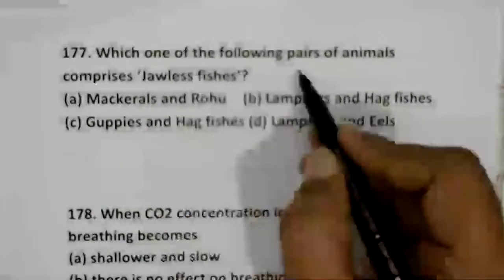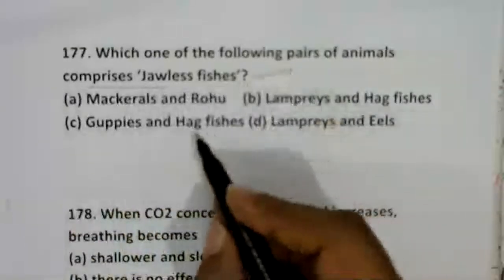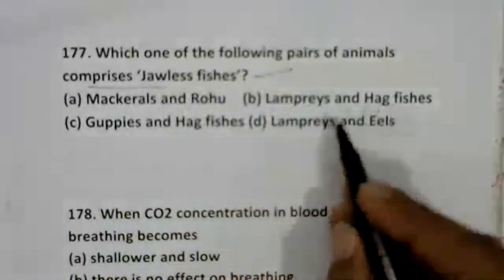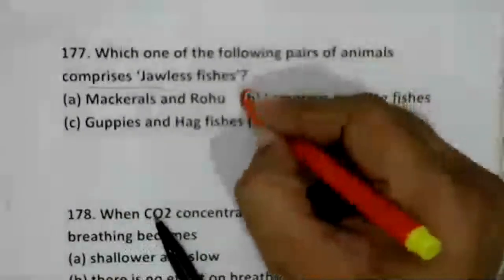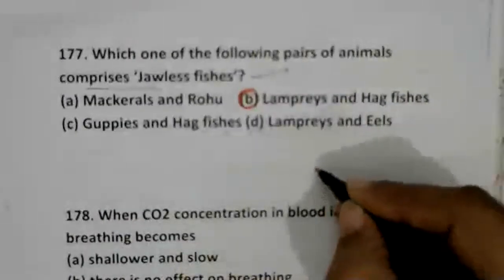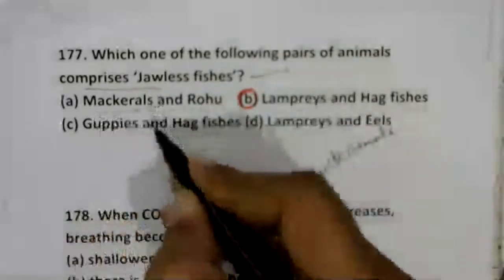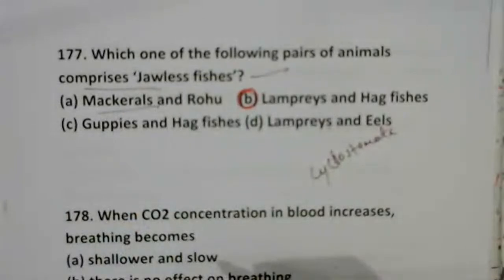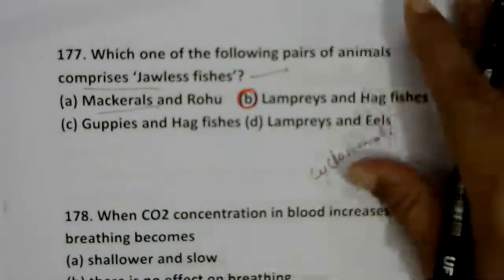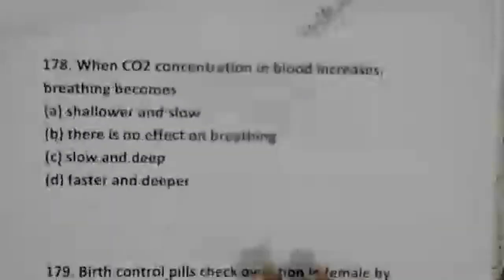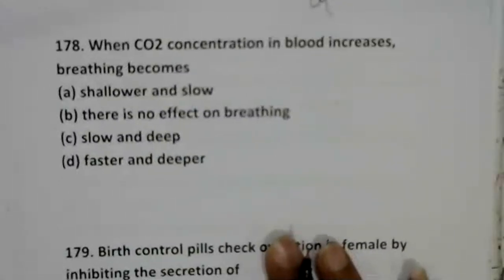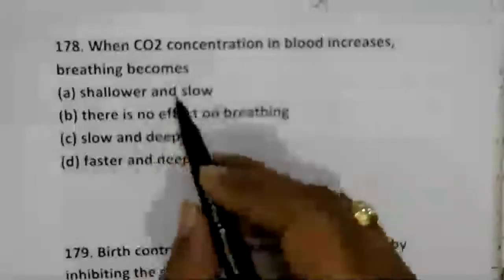Jawless fishes like lamprey and hagfishes belong to the superclass Cyclostomata. Mackerel and Rohu are bony fish — Rohu is a freshwater fish. These are beneficial fish species.